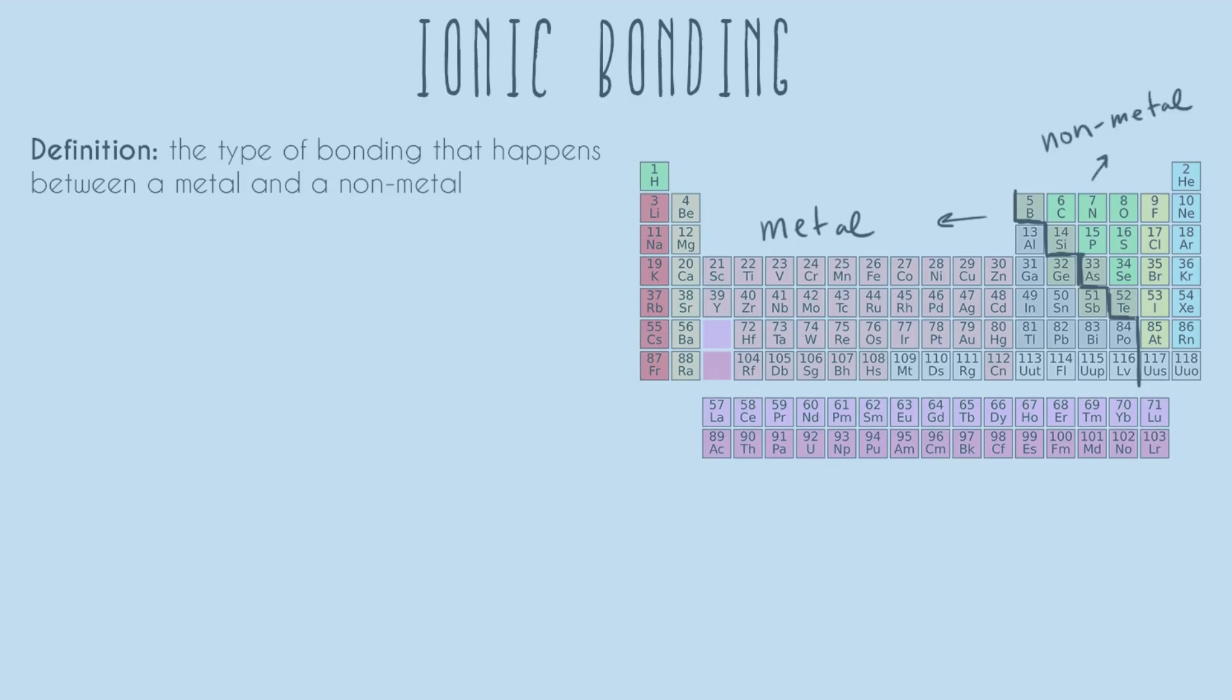The only exception to this is hydrogen, which is over here on the left-hand side, and this is also a non-metal. And so besides that, everything inside here, these are all of your metals. So if you have a bond that's happening between something that's in these two categories, this is going to be an ionic bond.